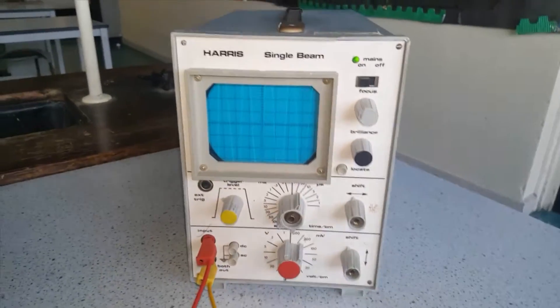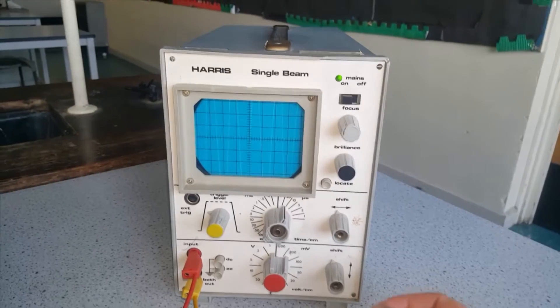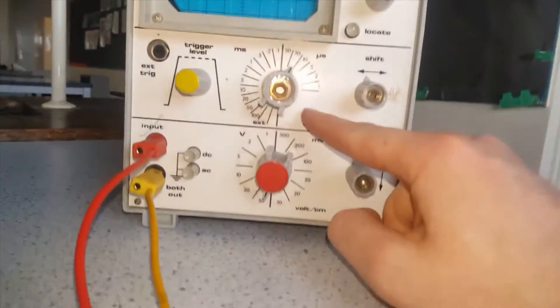So when you look at an oscilloscope you'll see an array of dials that you can turn and the most important ones are these two down here.